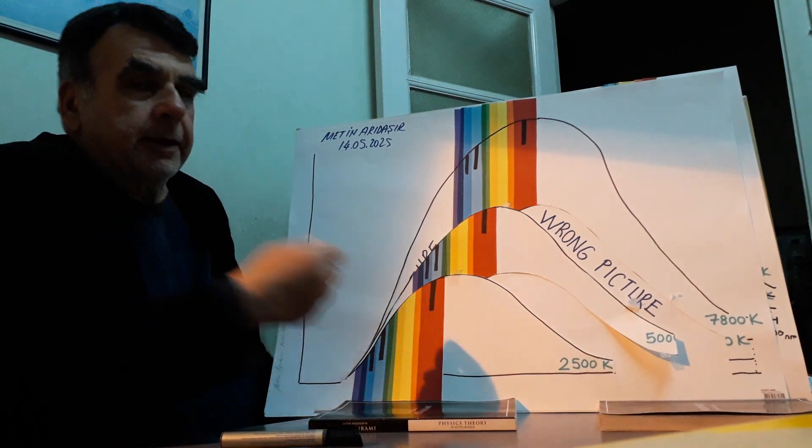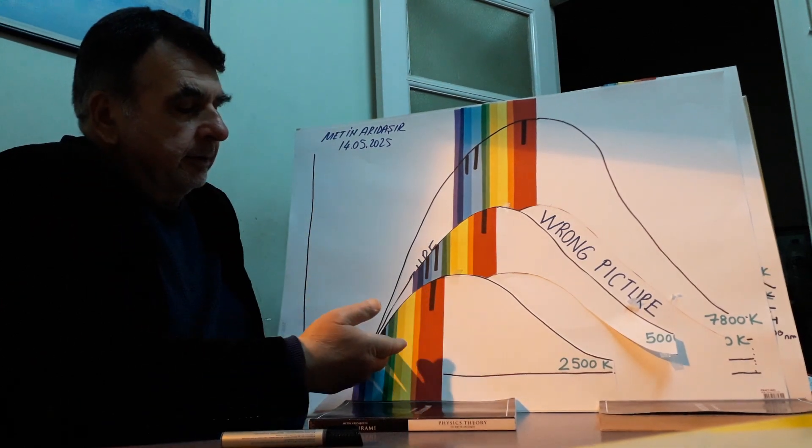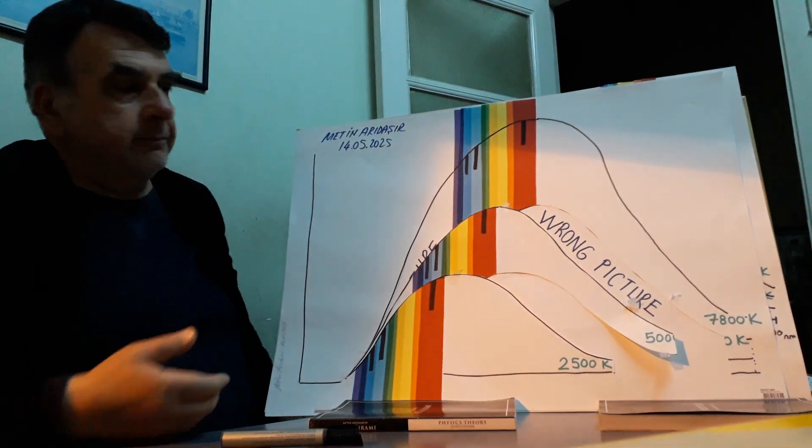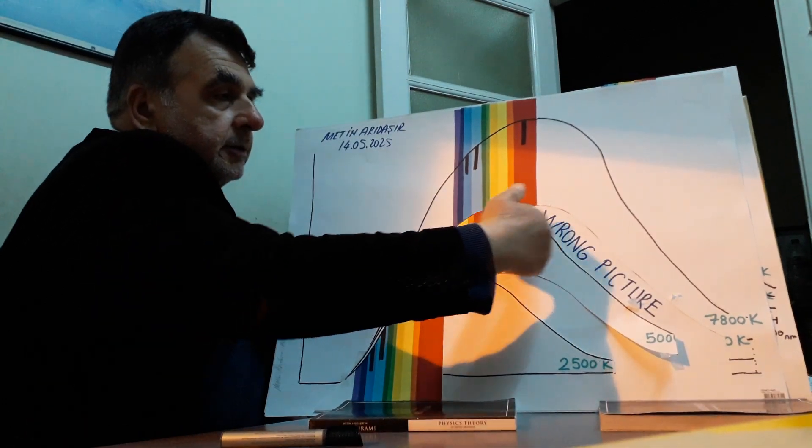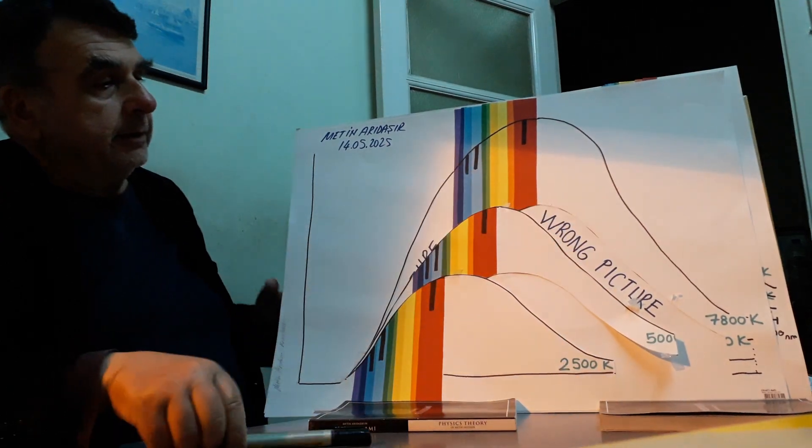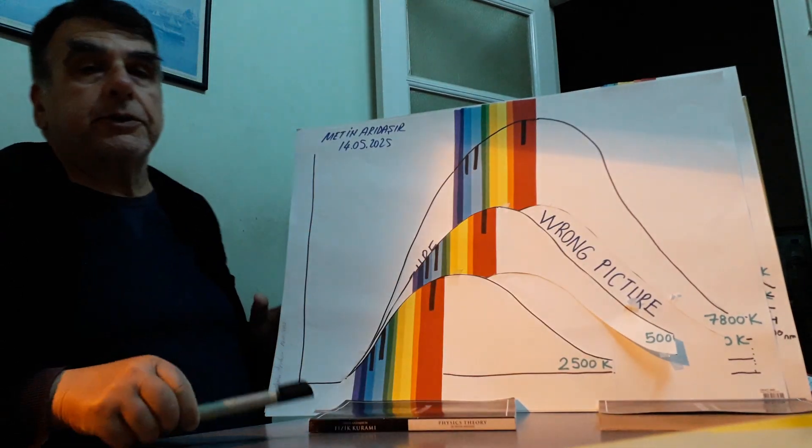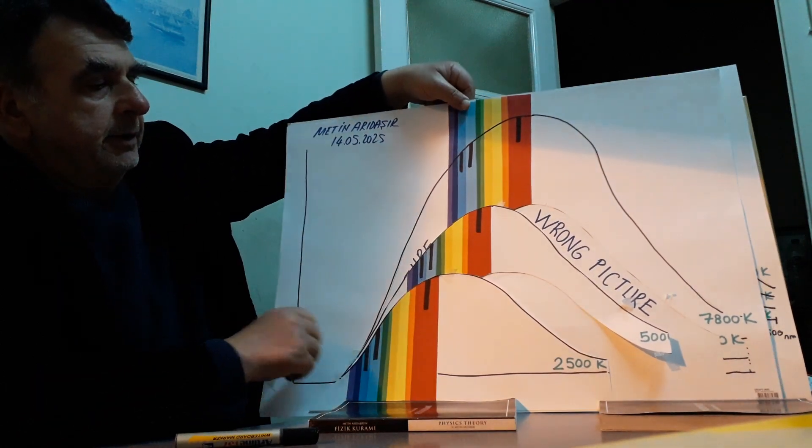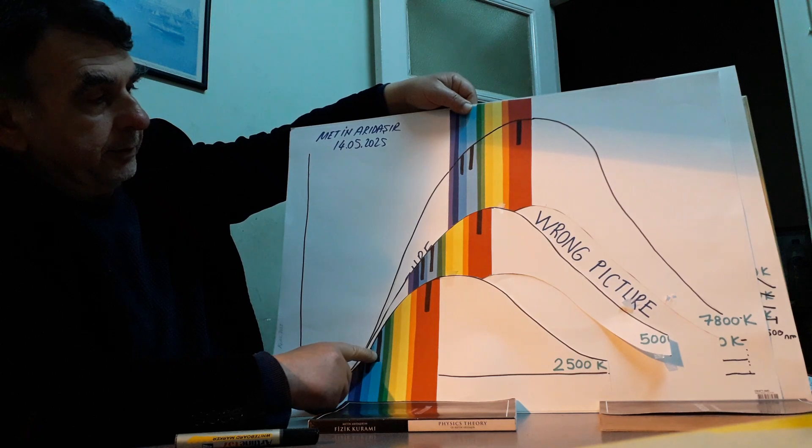These characteristic lines shifted to the red area. This is wrong picture of what accepted physics tells us.